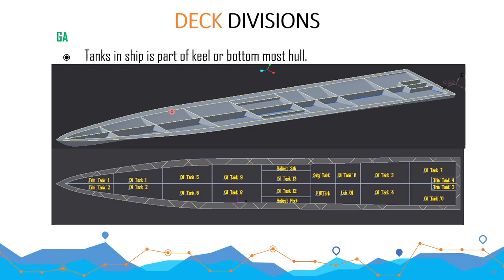This is the bottom-most portion of the ship. Tanks in the ship are part of the keel or bottom-most hull. These are the oil tanks and these are the trim tanks, used to control the trim of the ship. Most ships contain oil tanks, ballast water tanks, and water tanks in the keel portion.